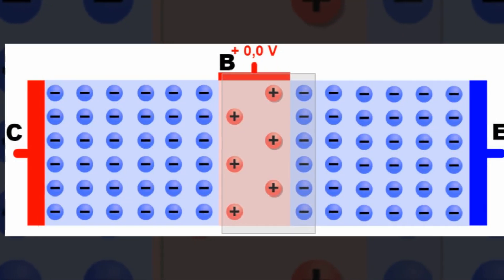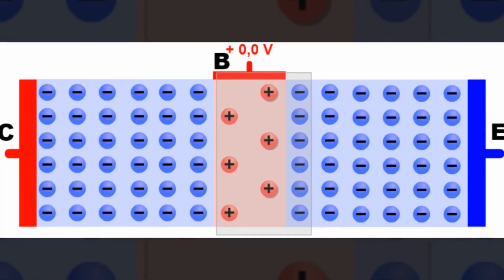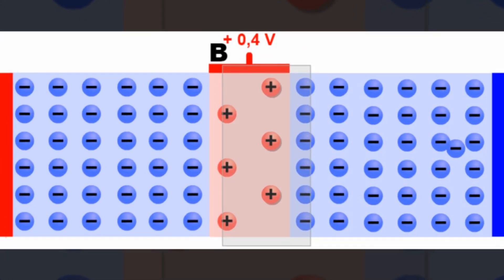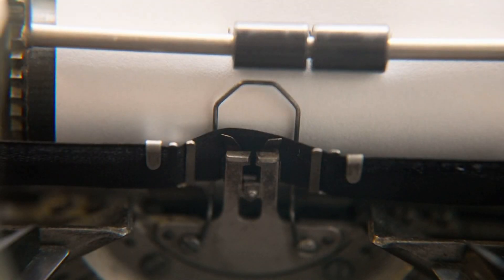Now, let's imagine BJTs as the diligent worker bees of the transistor world. They're always on the go, controlling current flow through the use of both positive and negative charges. This makes them versatile and reliable, a true jack-of-all-trades.